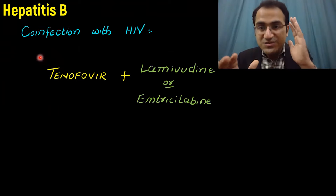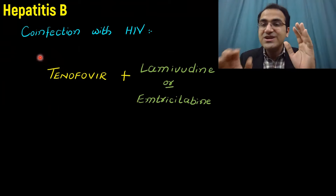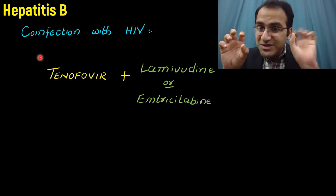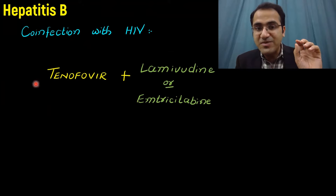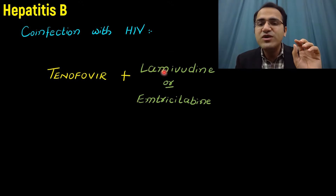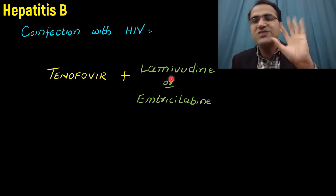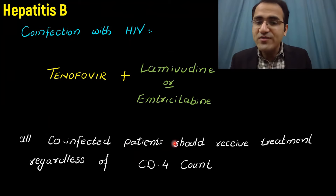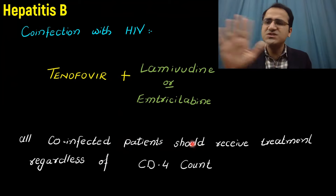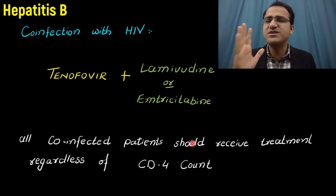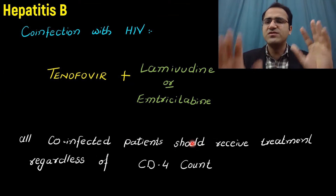If the patient has hepatitis B virus with HIV co-infection, we give tenofovir for hepatitis B and lamivudine or emtricitabine to treat the HIV virus. All co-infected patients should receive treatment regardless of CD4 count.